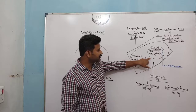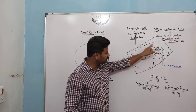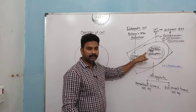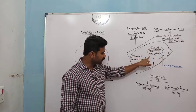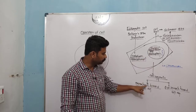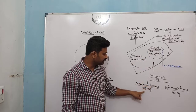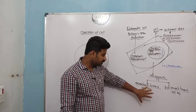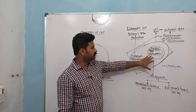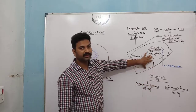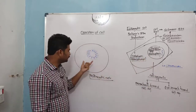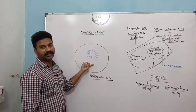For example, the nucleus has its own membrane, so it is a membrane-bound cell organelle. Such membrane-bound cell organelles are absent in the case of prokaryotes.